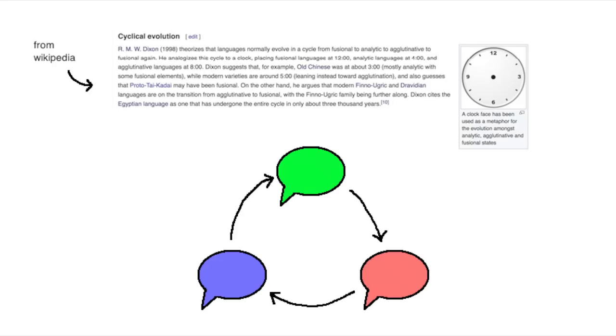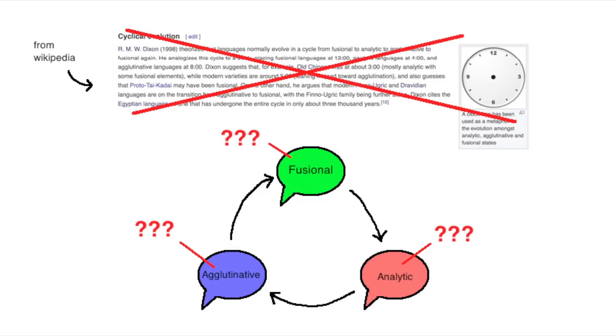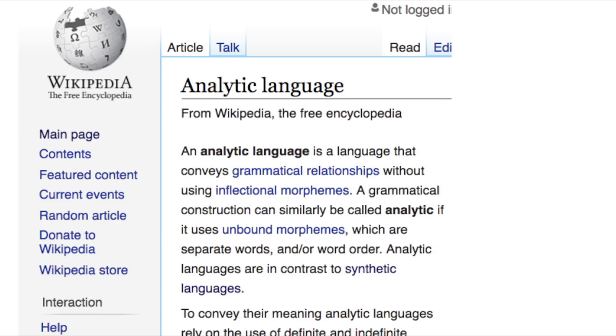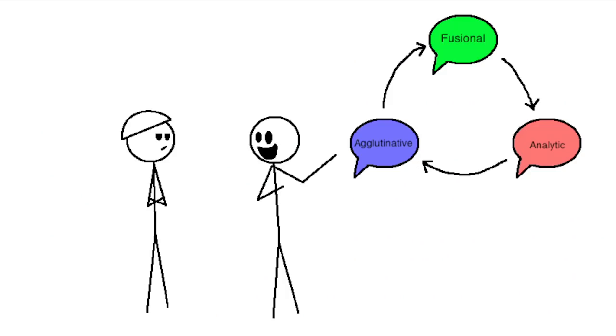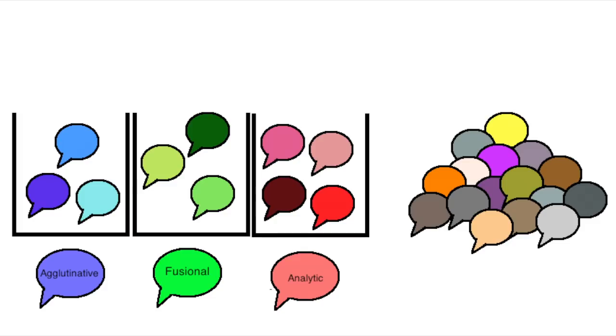Now, if I can go on a quick tangent, there's a theory out there that languages tend to move in a cycle, where fusional languages become analytic languages which become agglutinative languages which go back to being fusional again. If you don't know what any of those words mean, that's okay because I only wanted to bring it up to say that this theory isn't actually that popular.